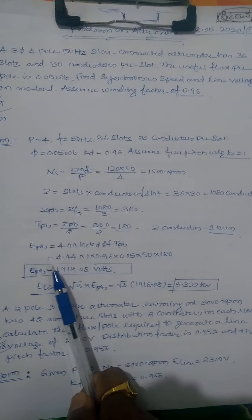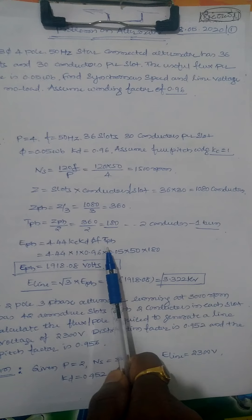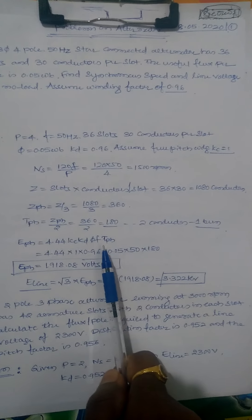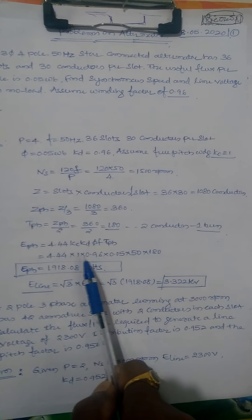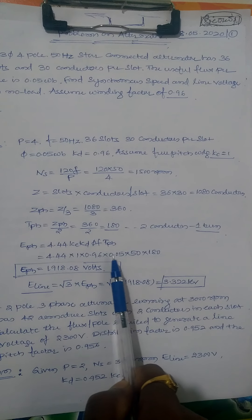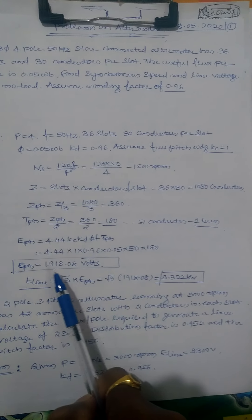E phase equals 4.44 KC KD flux phi frequency T phase. Just substitute all the values: 4.44 times KC is 1, times KD is 0.96, times flux is 0.05, times frequency is 50, times T phase 180. We get 1918.08 volts.